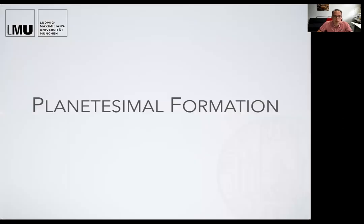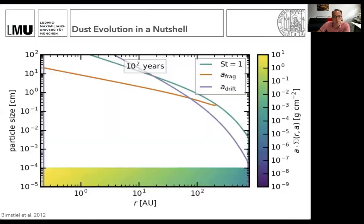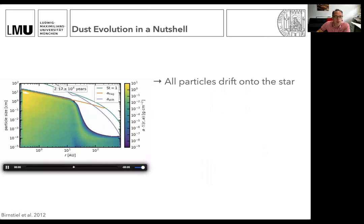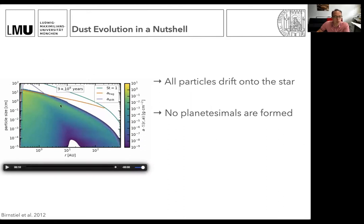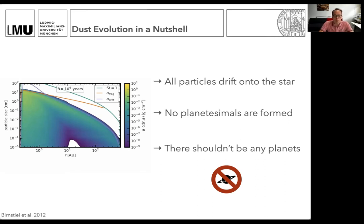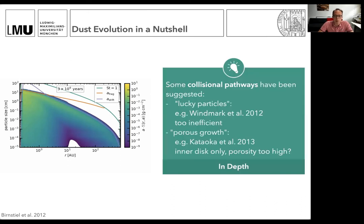What does this mean for the first step to forming planets — creating the building blocks of planets, the planetesimals? In the simulations, only particles of about 10 centimeters or so are formed. All particles otherwise drift towards the star. No planetesimals — meaning kilometer-sized bodies or larger — are formed, and there shouldn't be any planets. So that seems like a problem. There are two different pathways to solve this: one would be saying there is some collisional way where particles can still grow by gradually sticking together. There has been some work on this, but overall this doesn't seem very efficient or in some cases doesn't really match the observations.